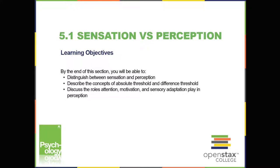You've probably known since elementary school that we have five senses: vision, hearing (or audition), smell (or olfaction), taste (or gestation), and touch (which is somatosensation). It turns out that this notion of five senses is oversimplified. We also have sensory systems that provide information about balance (the vestibular sense), body position and movement (proprioception and kinesthesia), pain (nociception), and temperature (thermoception).